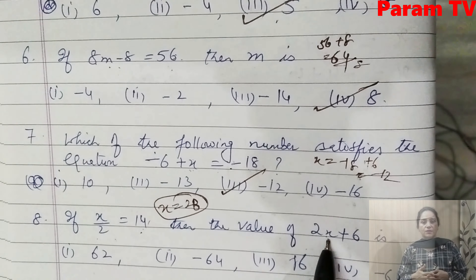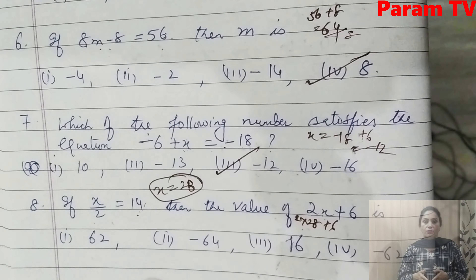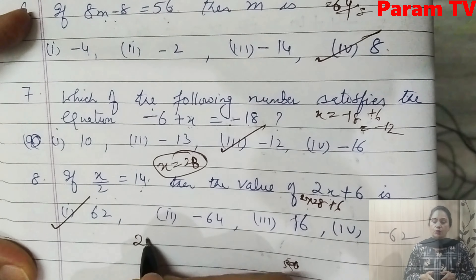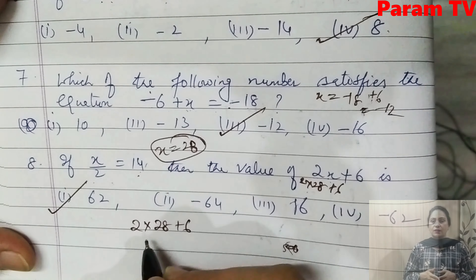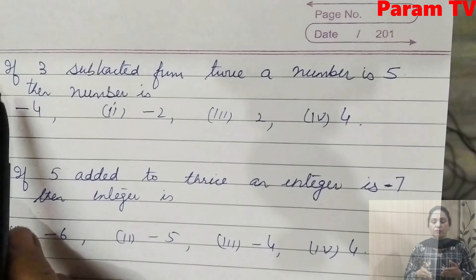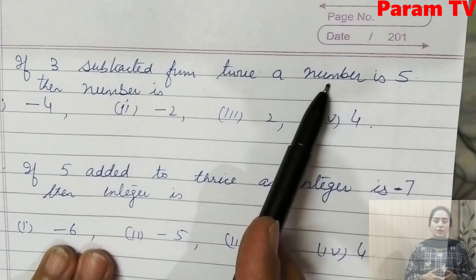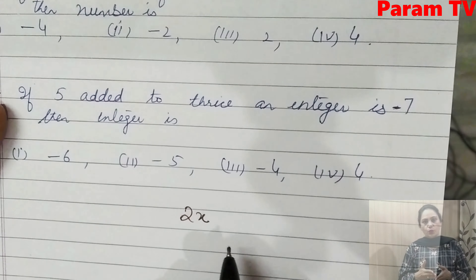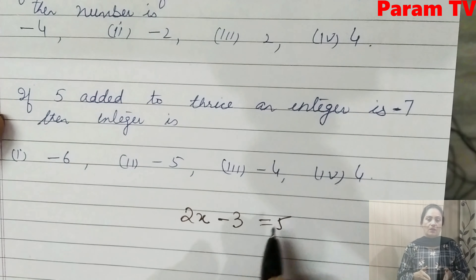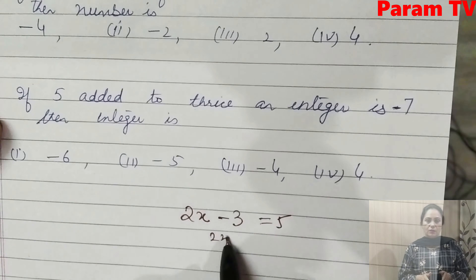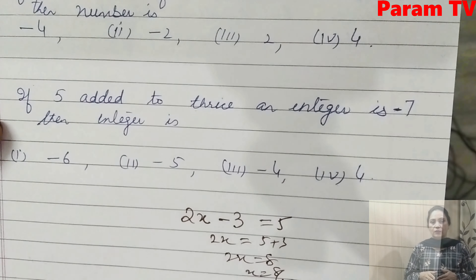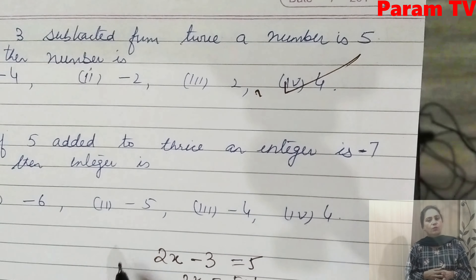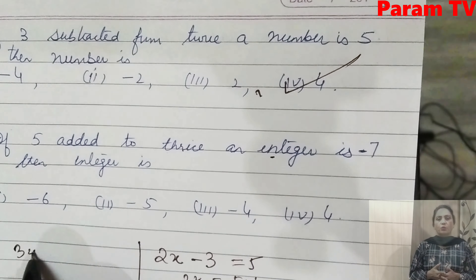Next word problem: if 3 is subtracted from twice a number, the result is 5. Let the number be x, so twice the number is 2x. Then 2x - 3 = 5, giving 2x = 5 + 3 = 8, so x = 8/2 = 4. The number is 4, which is the correct option.